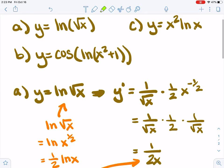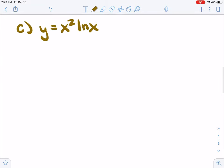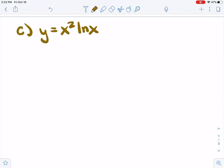Y equals x squared natural log of x for our final one. Now this is a product, right? We have two pieces of a product, so we will use the product rule.